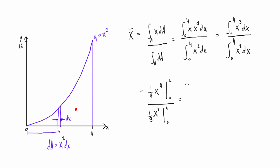So when we substitute these in, we basically just get 1 fourth times 4 to the power of 4, minus 1 fourth times 0 to the power of 4. And on the bottom, we get 1 third times 4 to the power of 3, minus 1 third times 0 to the power of 3. And obviously, these two terms just go to 0, so we can get rid of those, make our work a little bit easier.